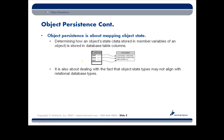So specifically, object persistence is about storing or mapping object state into a database. That usually means mapping an object's state — in other words, its member variables — to particular database columns. But it also deals with the fact that object state types typically don't align with our database types. For example, the last name of a customer might be a string type in Java, but in a database it's probably going to be something like a varchar.